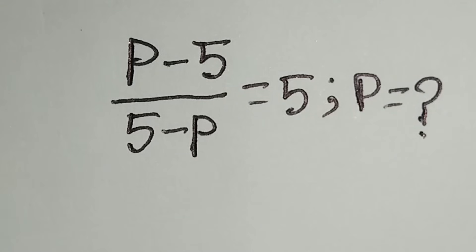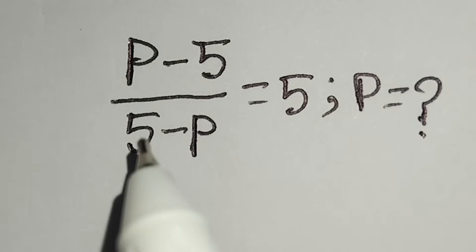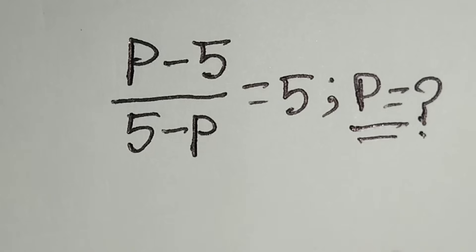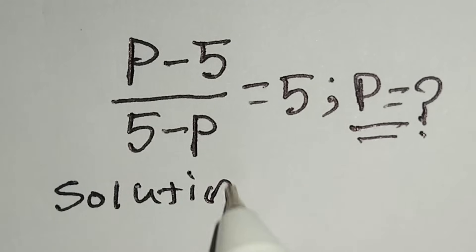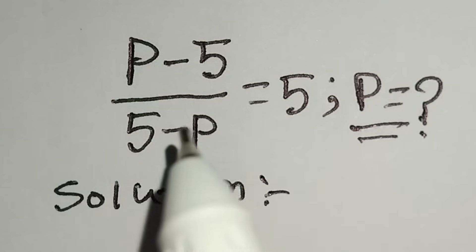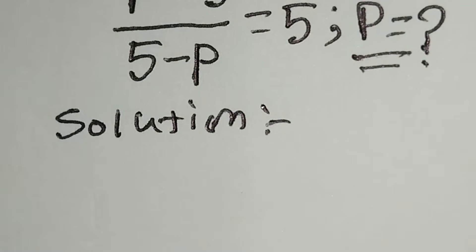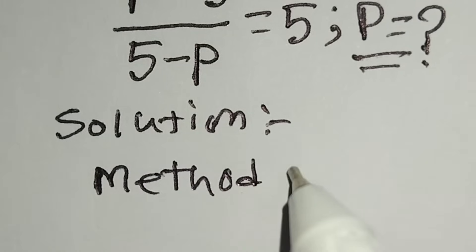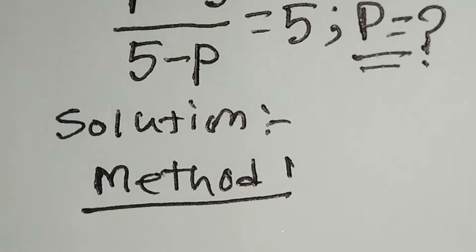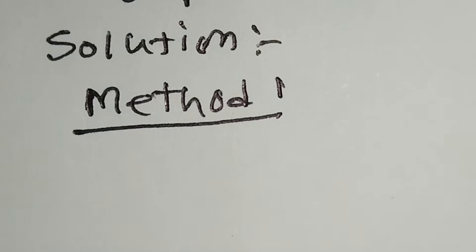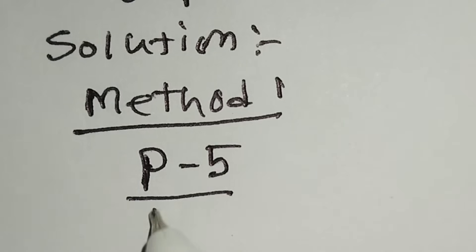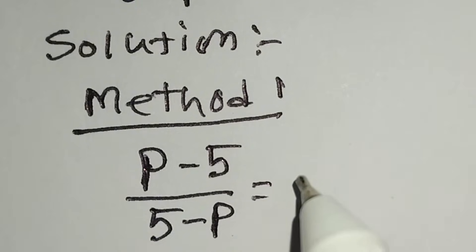Hello, this is a nice math problem: (p minus 5) over (5 minus p) is equal to 5, and we have to find the value of p. Let's start the solution. We will solve this math in two methods. Method one. The main equation is p minus 5 over 5 minus p is equal to 5.